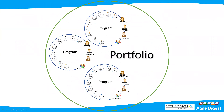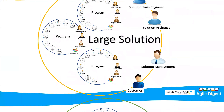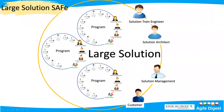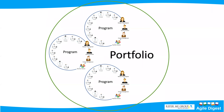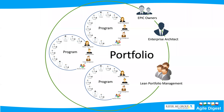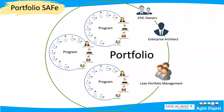That particular structure — combining multiple programs — is called Large Solution SAFe. Moving to portfolio: you can still have a portfolio without a large solution. At the portfolio layer there are different roles: Epic Owner, Enterprise Architect, and Lean Portfolio Management. The difference is at the portfolio level — I can have a large solution or a program directly under the portfolio.